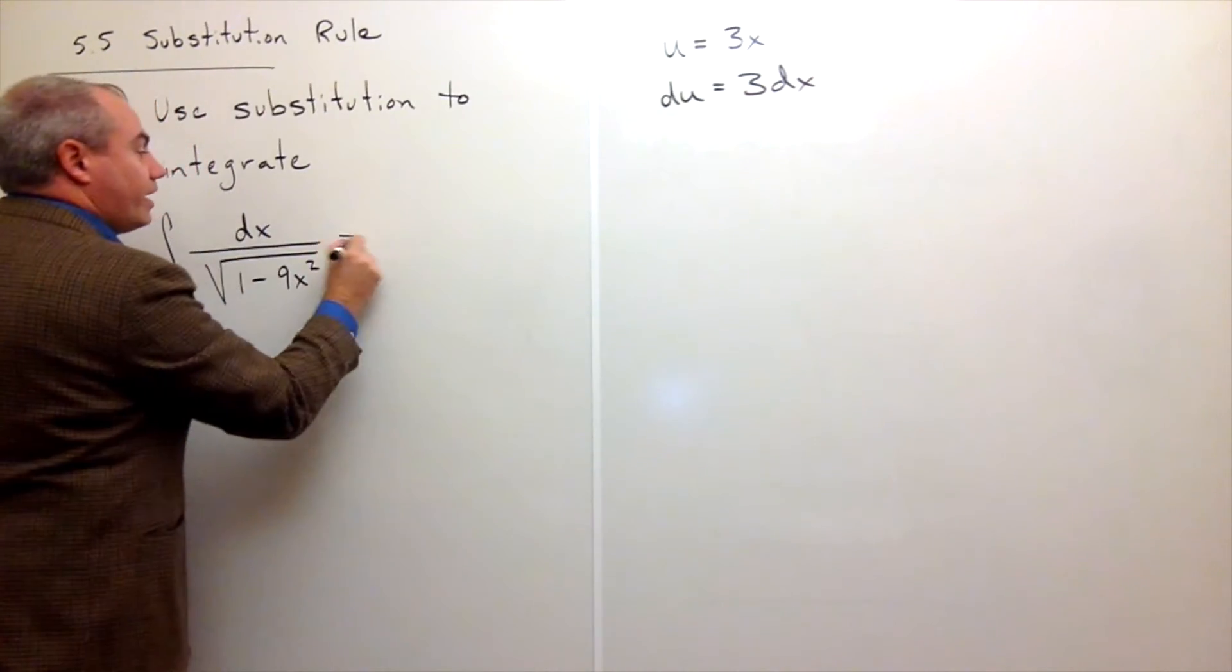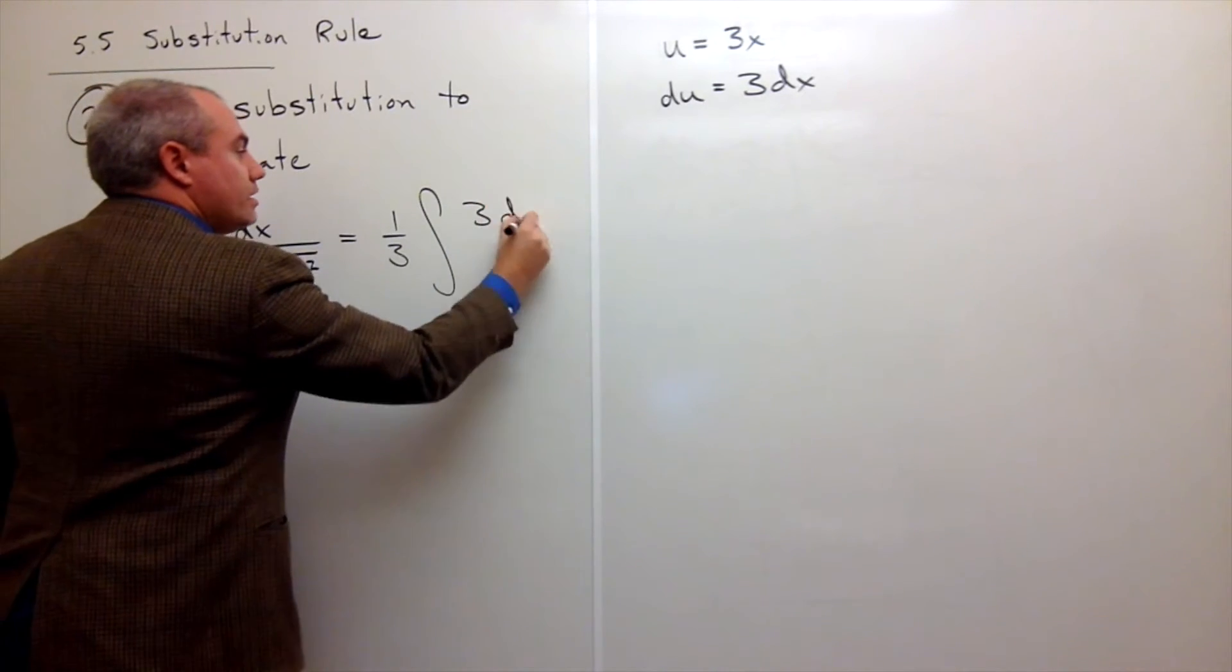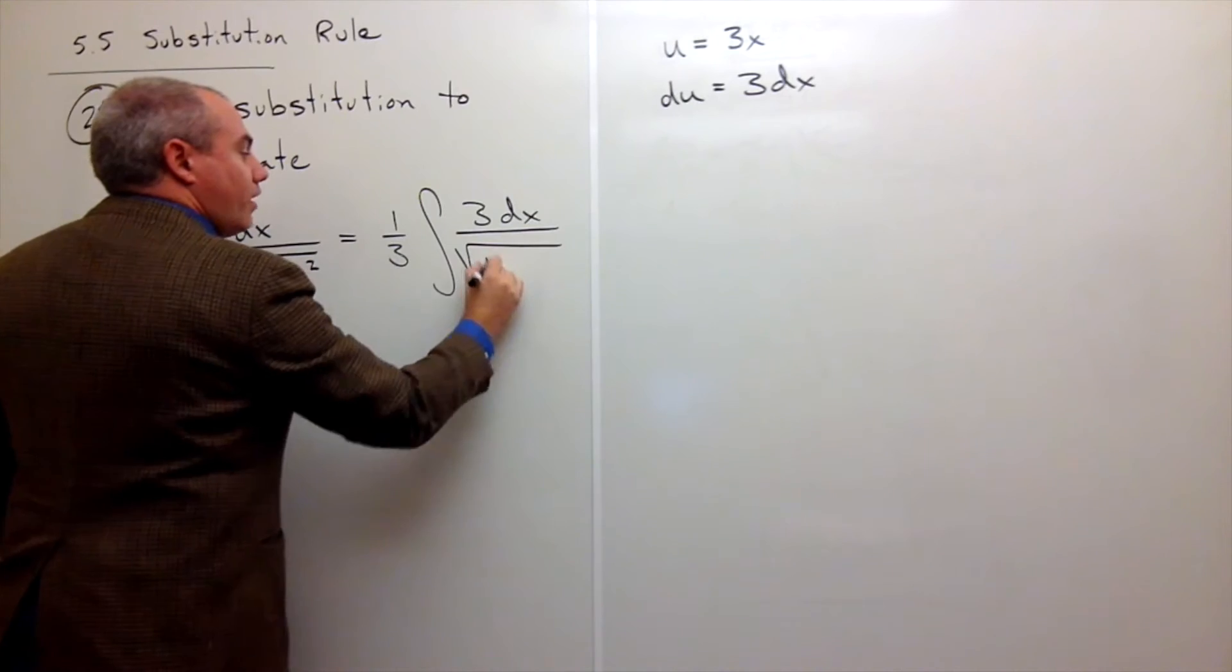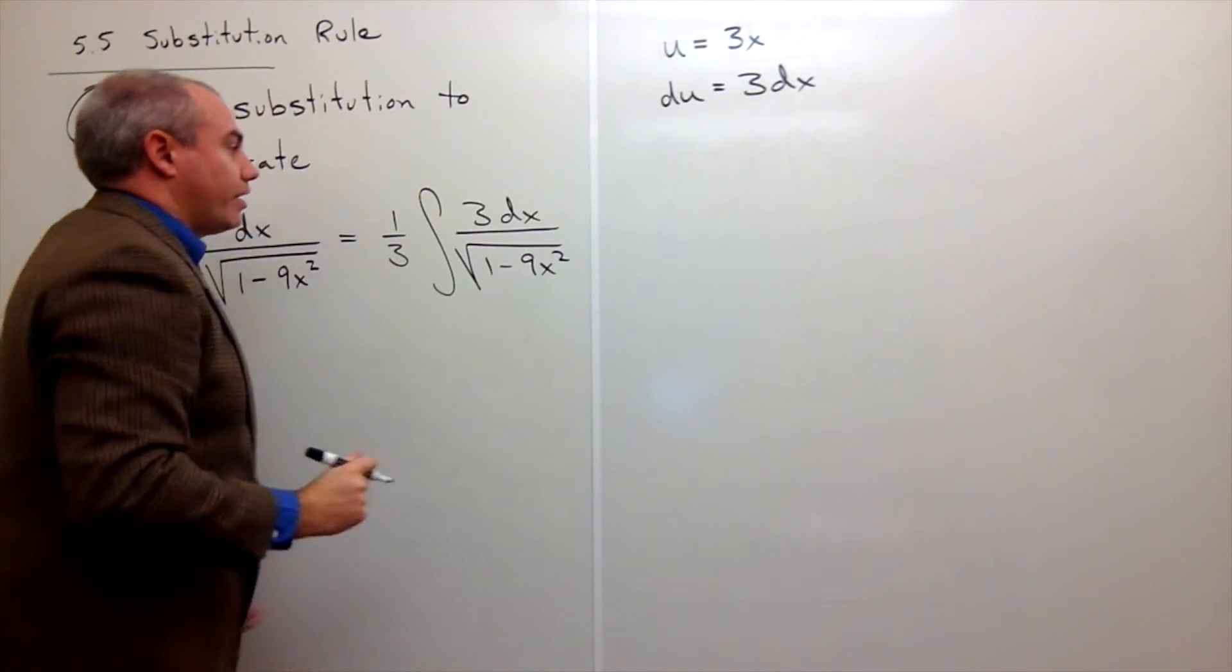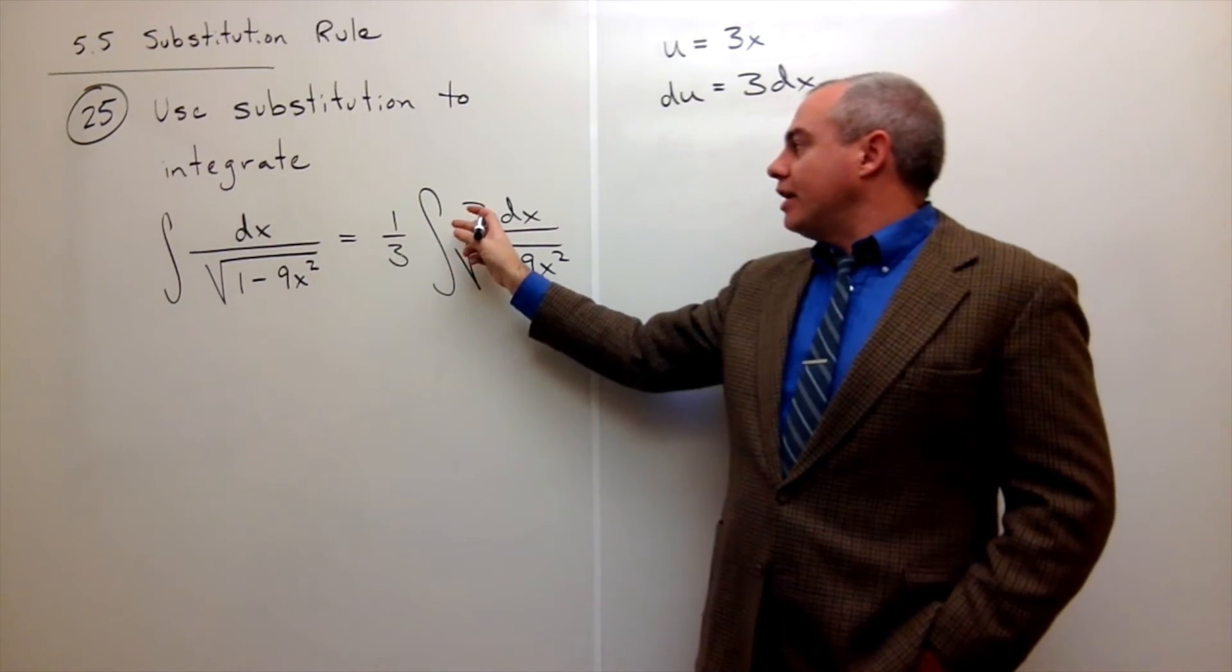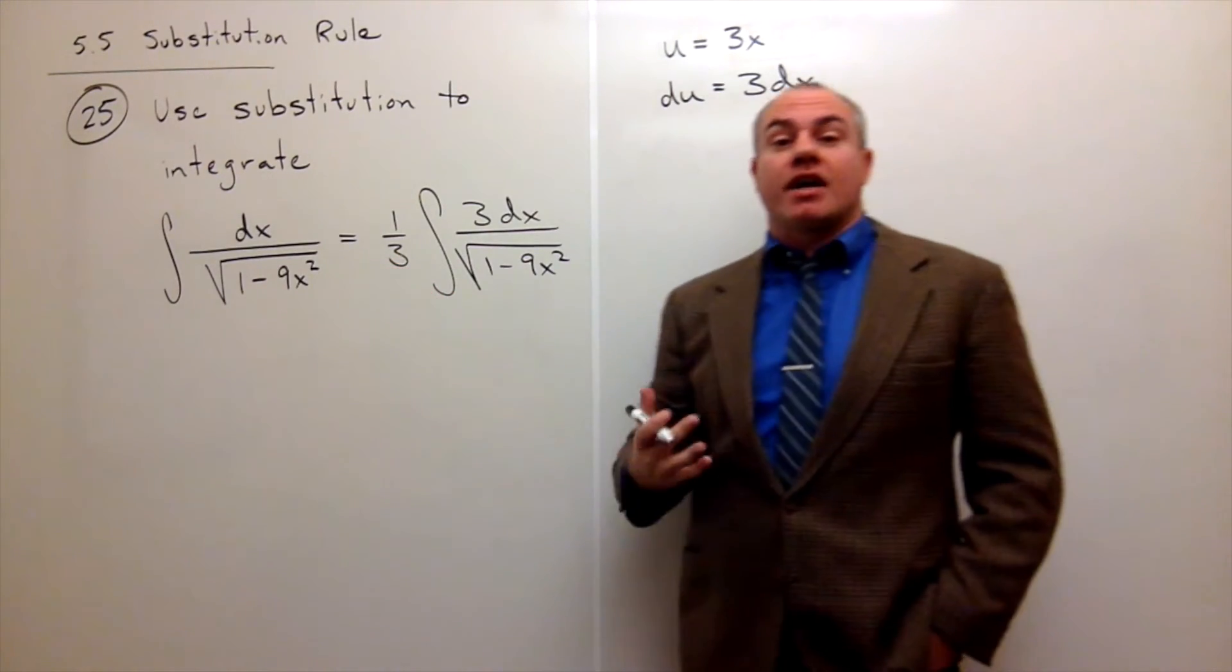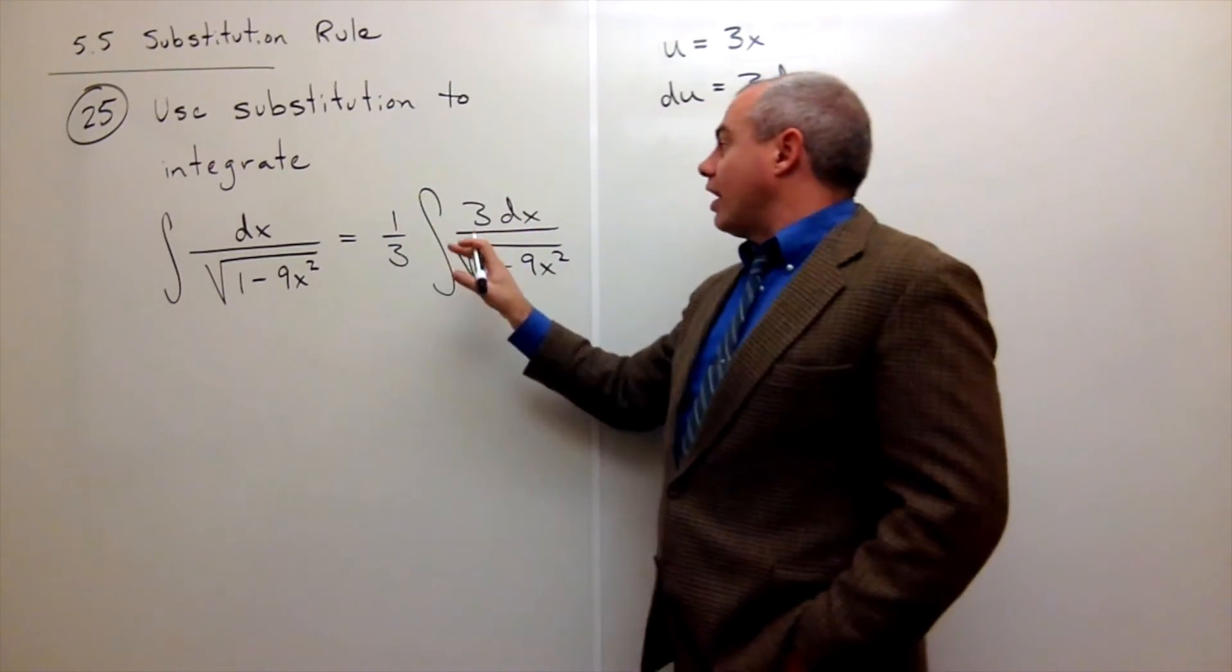Let me do that real quick. So we'll rewrite this. I'll write this as one-third the integral of 3 dx divided by the square root of 1 minus 9x squared. So notice that I multiplied on top by 3, and I multiplied on the bottom by 3. So really, I didn't change anything. I just multiplied this thing by 1, so everything's fine.